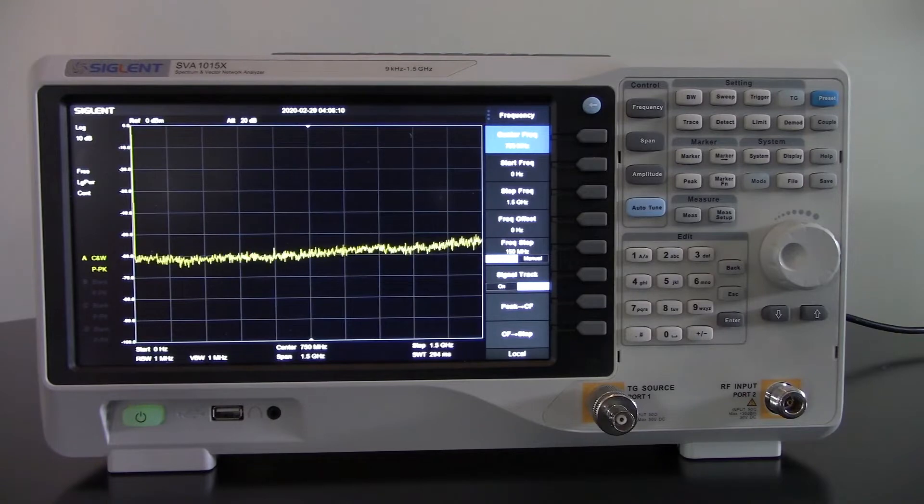So the distance to fault can help you troubleshoot that particular line and determine where those faults might be. Maybe the insulation has worn away and you're losing some of the conductivity on that cable due to corrosion, or you have a break in the actual cable.